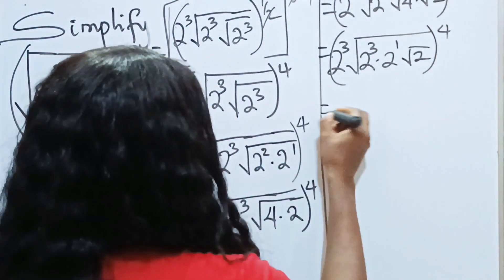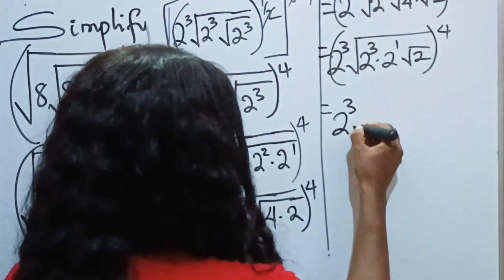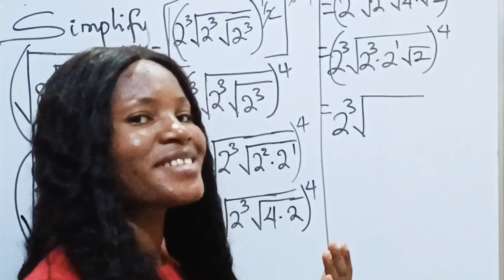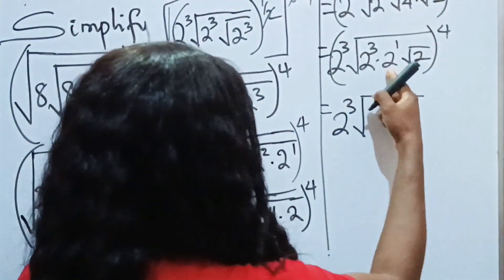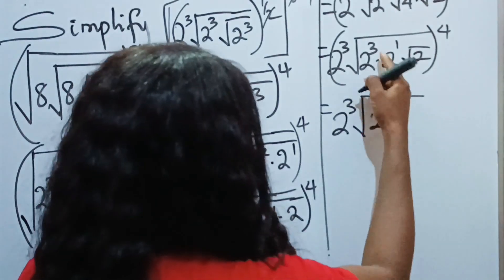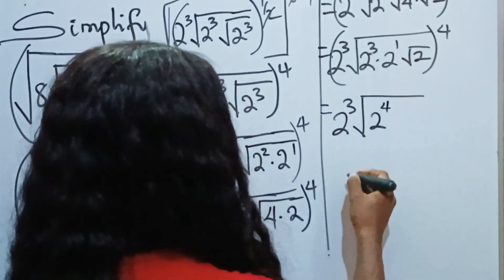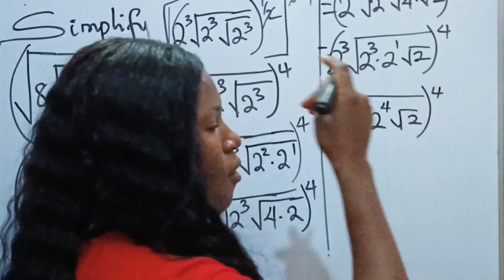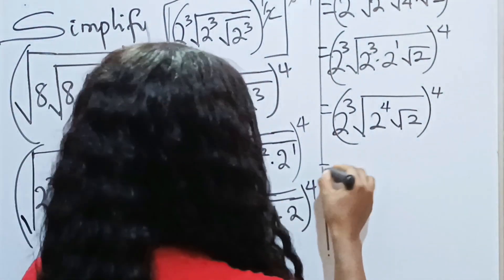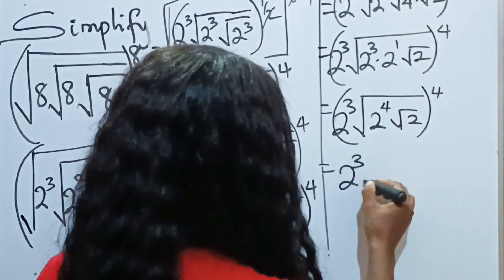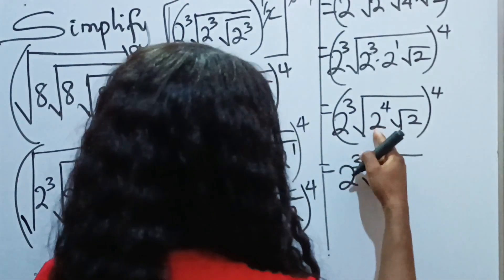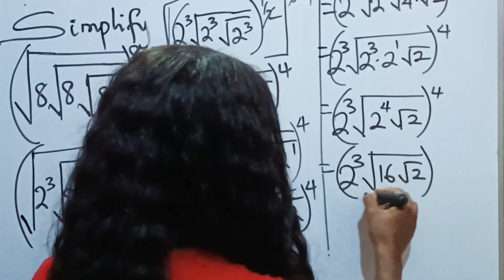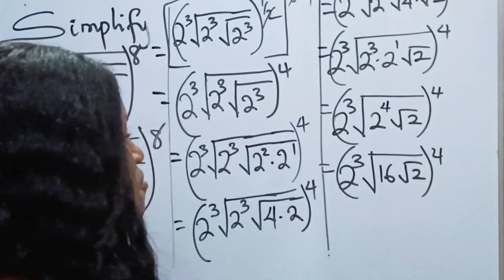So we have 2 to the power of 3, multiplied by 2 to the power of 2 — since we have the same base we pick one and add the powers to get 2 to the power of 4, which is 16 — then we have the square root of 2, with everything raised to the power of 4. The square root of 16 gives us 4, which is 2 to the power of 2, and we still have the square root of 2.